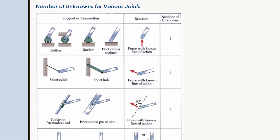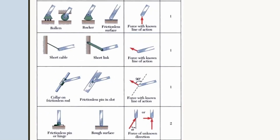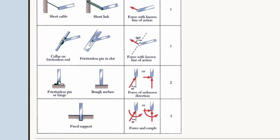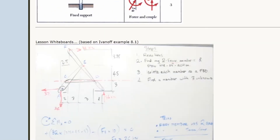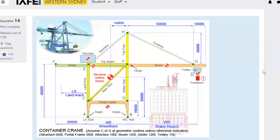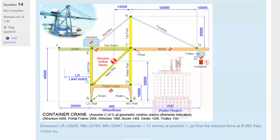Don't forget the contact points table — very handy for rollers and cables, which are single force, and pin joints, which have two unknowns — Ax and Ay, or a force and an angle. Back to the quiz now.